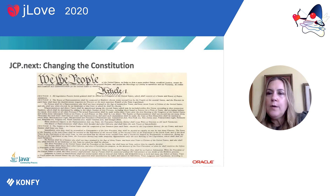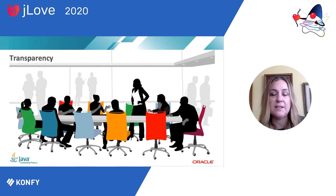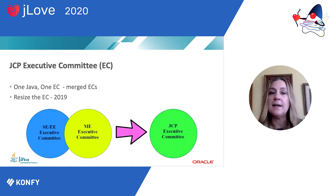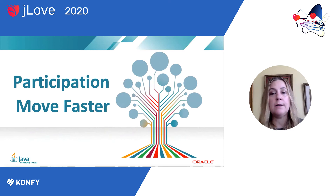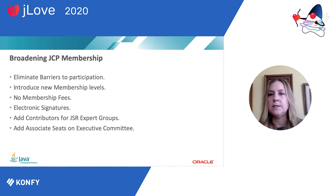The next part of my presentation highlights some of the changes we've made in the JCP organization to keep up with the needs of the developer community. We've had to make changes to keep up with the changing pace of Java software development. The first area we addressed was transparency — everything I've talked about is available and open to the public. We've also resized our executive committee to have a specific focus on the Java SE platform, and we looked at how we can enable JSRs to move faster and enable broader participation from the community.